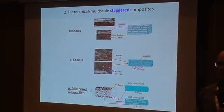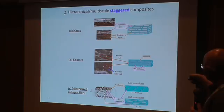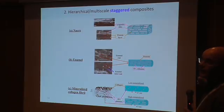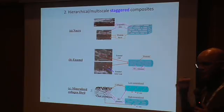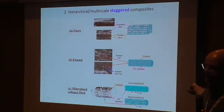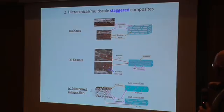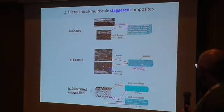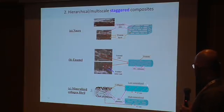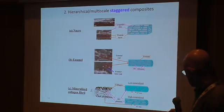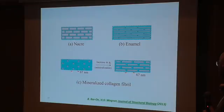The second part is staggered composites. Staggering is something very interesting that we find a lot in nature. Nacre is one example — it's a brick-and-mortar arrangement. Enamel, the hard part of your teeth, has hydroxyapatite platelets inside, and mineralized collagen fibrils, which can be lightly or highly mineralized depending on the age of the person.